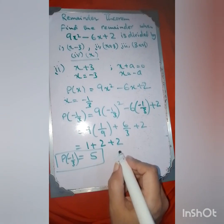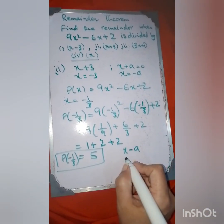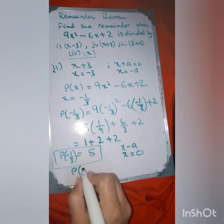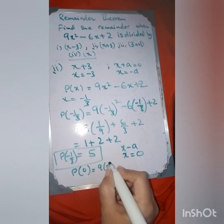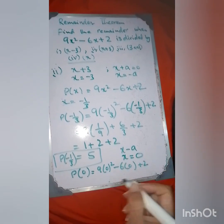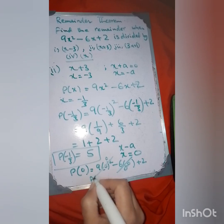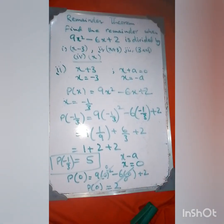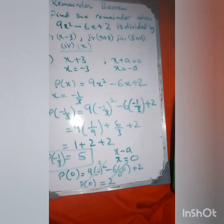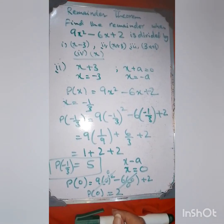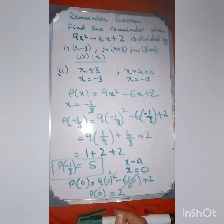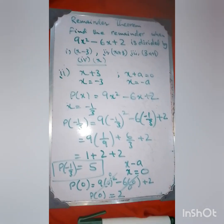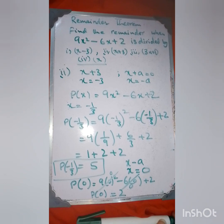For part 4, the divisor is just x. Comparing with x minus a, we get x = 0. Substituting into p(x): p(0) = 9(0)² − 6(0) + 2 = 0 − 0 + 2 = 2. The remainder is 2. I hope you will attempt the questions on your own after watching this video. In the next video, inshallah, we will cover the factor theorem. If you have any questions, please let me know and go through the remainder theorem exercises.